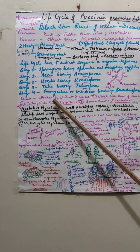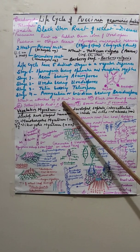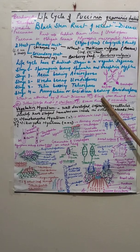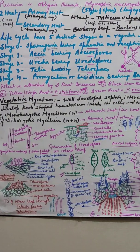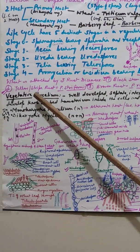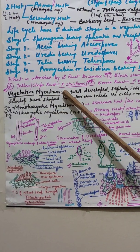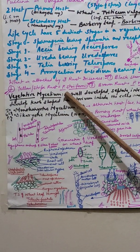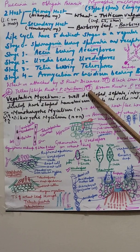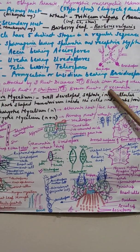In India, there are a total of 3 rust diseases found on wheat. One is black stem rust of wheat, caused by Paxcinia graminis tritici. The other is yellow or stripe rust of wheat, caused by Paxcinia striiformis. The third is brown rust of wheat, caused by Paxcinia recondita.